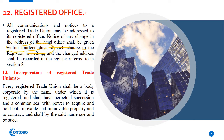Section 13 is about the incorporation of registered trade unions. Every registered trade union shall be a body corporate by the name under which it is registered and shall have perpetual succession and a common seal, with power to acquire both movable and immovable properties and to contract, and shall by the same name sue and be sued.